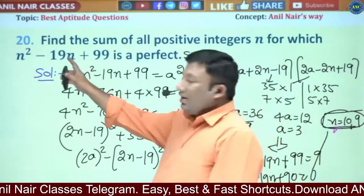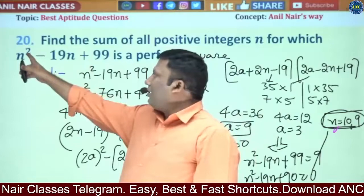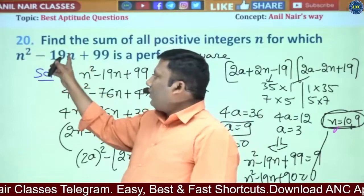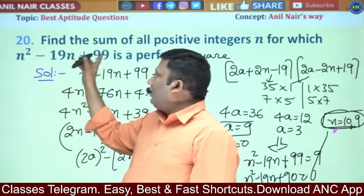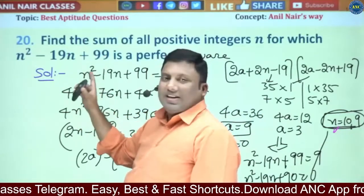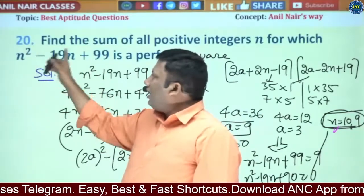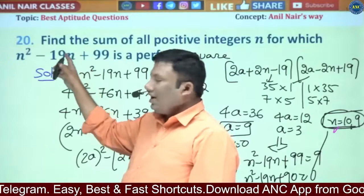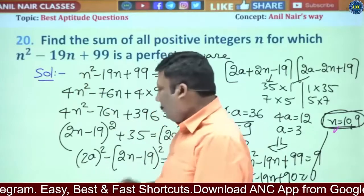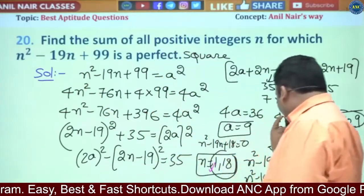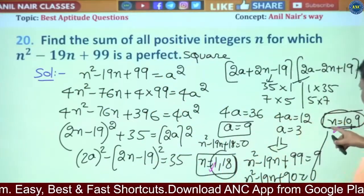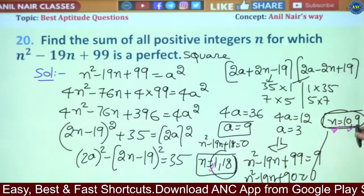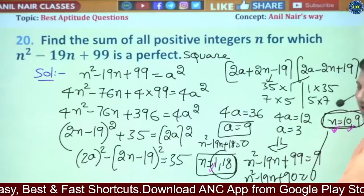N value 10. 10 squared is 10 squared minus 190 plus 199, which gives 100 plus 99. Then 199 minus 190 equals 9, which is not a perfect square. For N value 9...